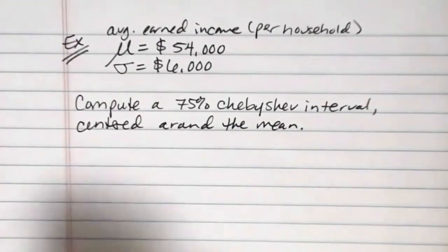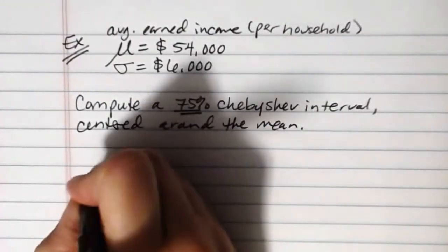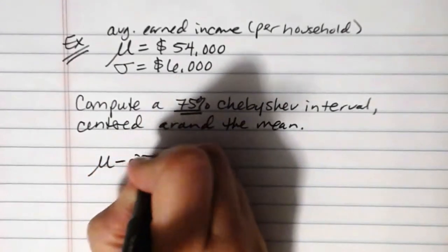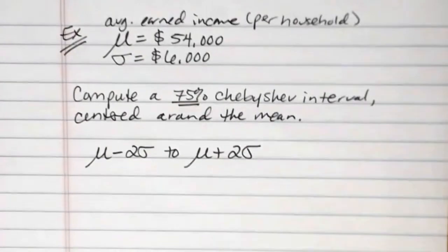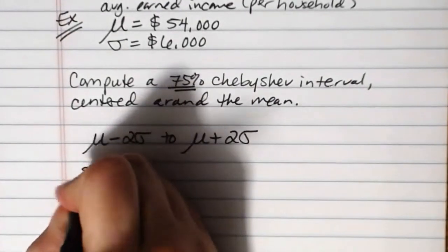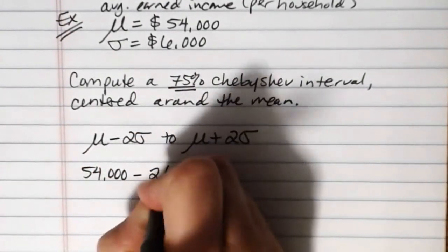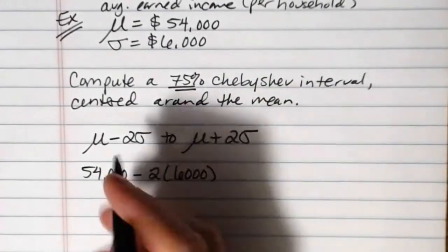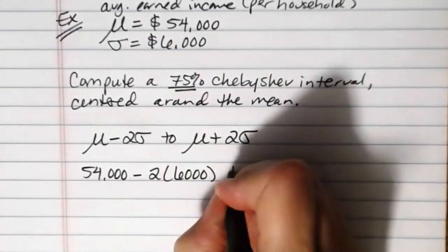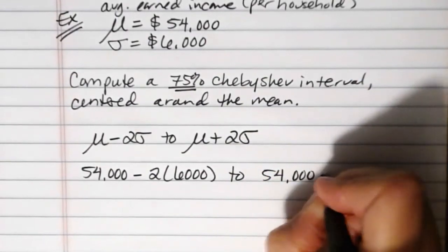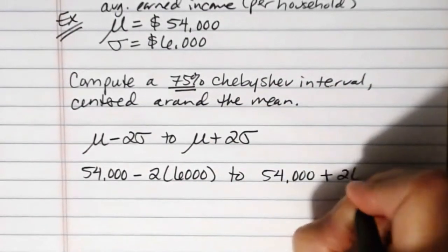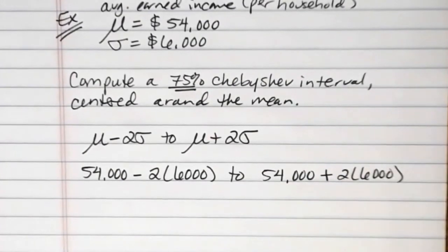So 75%, mu minus 2 sigma to mu plus 2 sigma. So here my mu is 54,000 minus 2 times 6,000, that's the lower bound for the interval, to 54,000 plus 2 times 6,000.